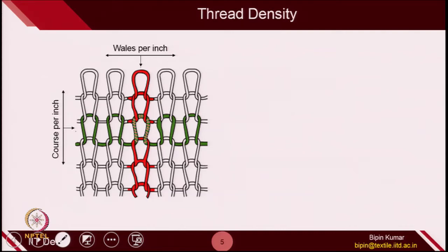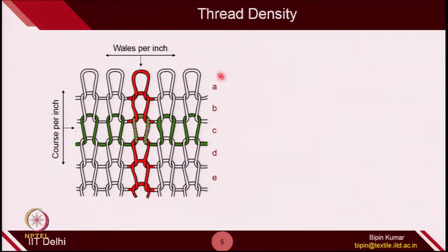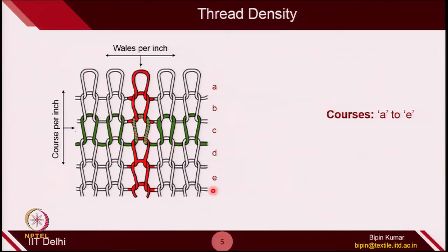Thread density is also frequently used to describe a knitted structure. In thread density, we can describe the number of rows present per unit length. For example, there are five courses — A to E. The length required to occupy these five courses divided by that length gives courses per inch. Apart from courses per inch, we also have wales per inch: the number of wales divided by the total horizontal length occupied by the fabric gives wales per inch.